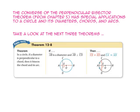The converse of the perpendicular bisector theorem has special applications to a circle and its diameters, chords, and arcs. Theorem 12-8 states that in a circle, if a diameter is perpendicular to a chord, then it bisects the chord and its arcs. So, since segment AB is the diameter and it is perpendicular to chord CD, then segment CE is congruent to segment ED, and arc CA is congruent to arc AD.